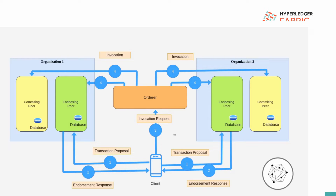When the transaction is received at the endorsing peers, the first thing the endorsing peer does is validate the transaction - checking if the client is authorized to perform the transaction, if he has the right to perform the transaction as per his signing certificates. Then the endorsing peer creates the transaction proposal response.